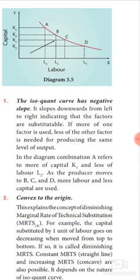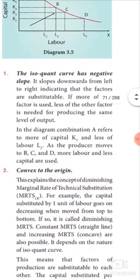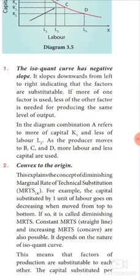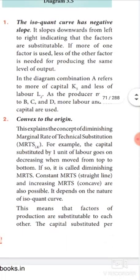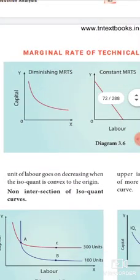The amount of capital substituted by one unit of labor goes on decreasing as we move from top to bottom along the isoquant curve. This is called diminishing marginal rate of technical substitution. Constant and increasing marginal rates of return are also possible, depending on the nature of the isoquant. This means the factors of production are substitutable, and capital substituted per unit of labor decreases when the isoquant curve is convex to the origin.